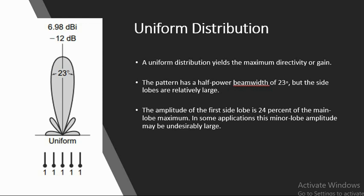The amplitude of the first side lobe is almost 24% of the main lobe. But because of maximum directivity and gain, uniform distribution is preferred.